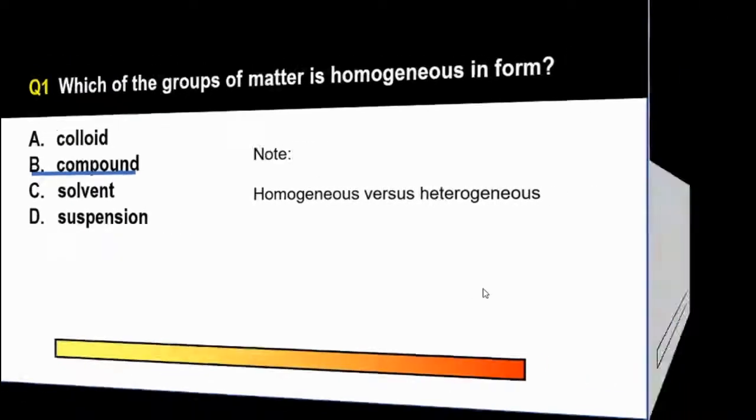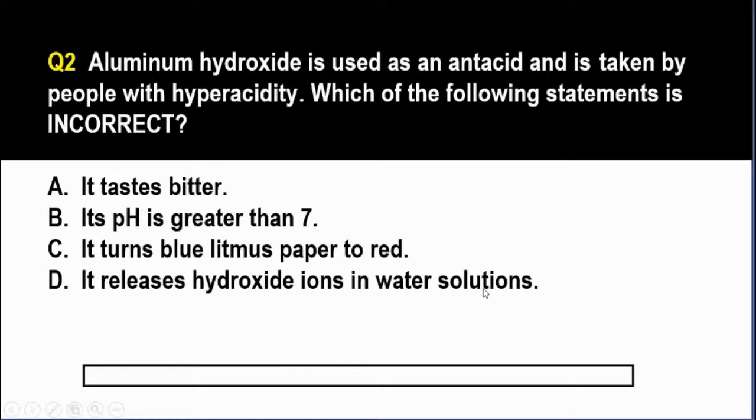For question number two, aluminum hydroxide is used as an antacid and is taken by people with hyperacidity. Which of the following statements is incorrect? A. It tastes bitter. B. Its pH is greater than 7. C. It turns blue litmus paper to red. And D. It releases hydroxide ions in water solutions. Go!